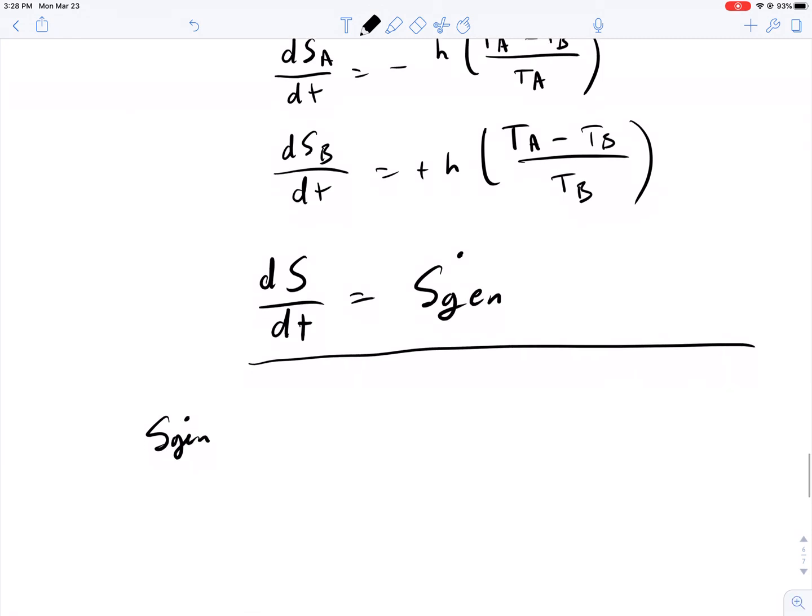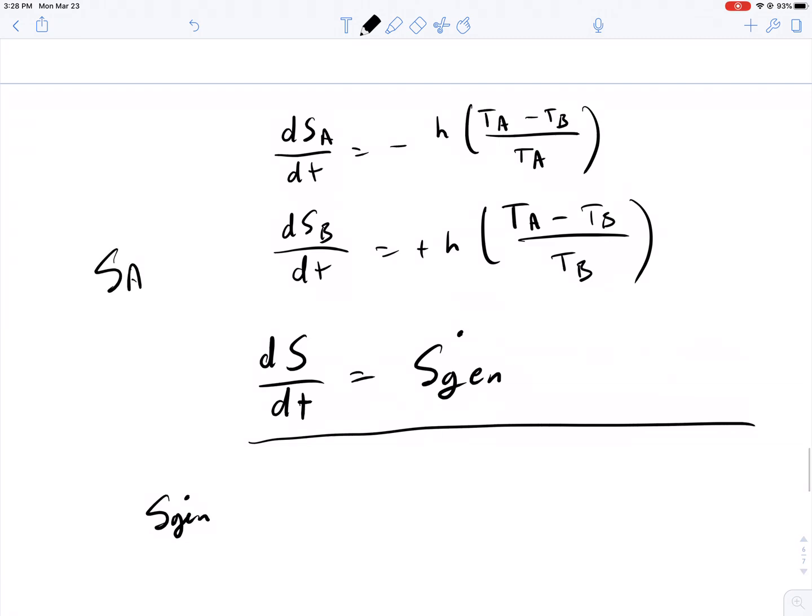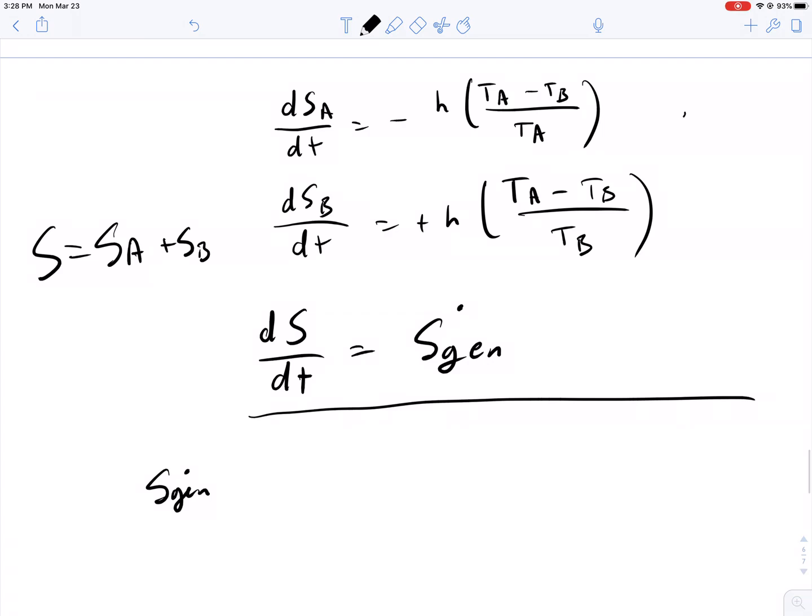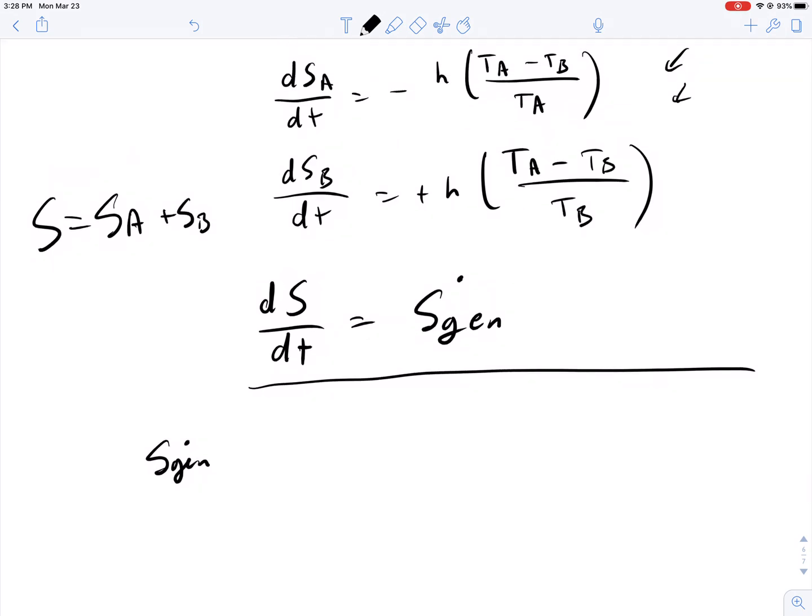So, if we wanted to figure out what SGEN is, we just say that SA, that's the entropy in system A, plus the entropy in system B, is equal to the entropy in the composite system. We can track how entropy is changing individually in A and B, and then determine how entropy generation is determining for the system as a whole.